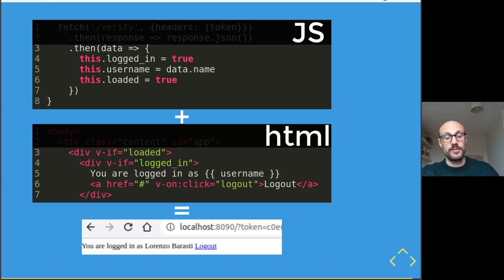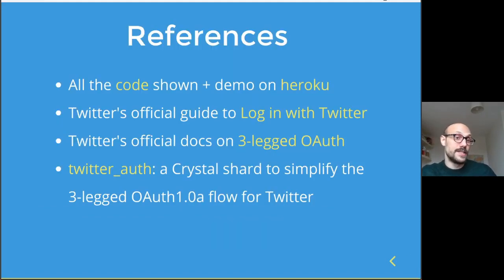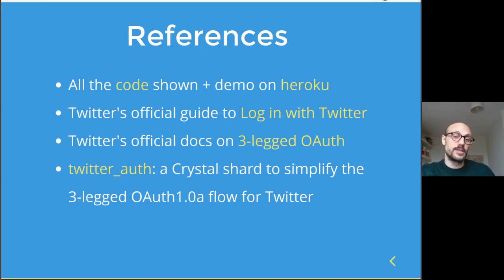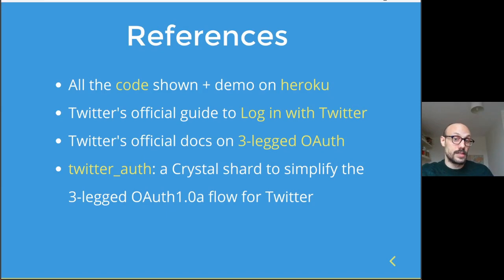After the then block you'd also want a catch to handle invalid tokens, but I've trimmed the code for simplicity. Thanks for watching — I hope you enjoyed this tutorial on integrating sign-in with Twitter into your Crystal application. All the code shown, plus a demo on Heroku, can be found via the links provided. There's also a link to Twitter's official guide to the login with Twitter functionality and the three-legged auth flow, and a link to the crystal-twitter-auth shard I used to write this example.